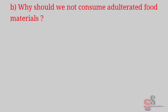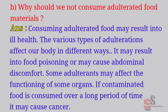B. Why should we not consume adulterated food materials? Answer: Consuming adulterated food may result in ill health. The various types of adulterations affect our body in different ways. It may result in food poisoning or may cause abdominal discomfort. Some adulterants may affect the functioning of some organs. If contaminated food is consumed over a long period of time, it may cause cancer.